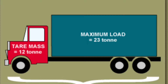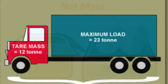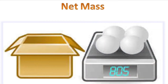Today we'll be learning about the difference between net mass and gross mass. Gross mass is the weight of the contents and the packaging, while net weight is the weight of the contents only.